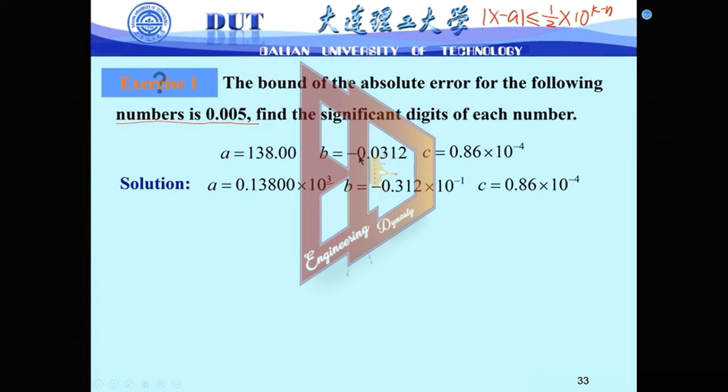For B, also we need to move to the right side, just 1. So 10 to minus 1, because move to right, so here minus negative. For C, just the normalized form 0.86 multiply 10 to minus 4. So we know k, different k for each.